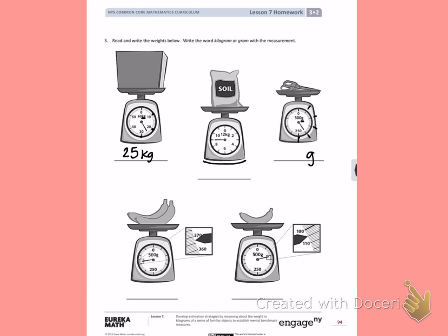So again, I have 50, 100, 150, 200. The arrow is pointing to 200 grams.